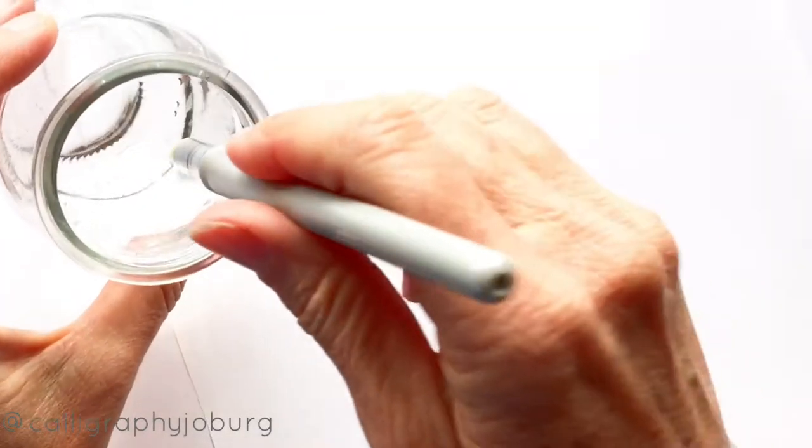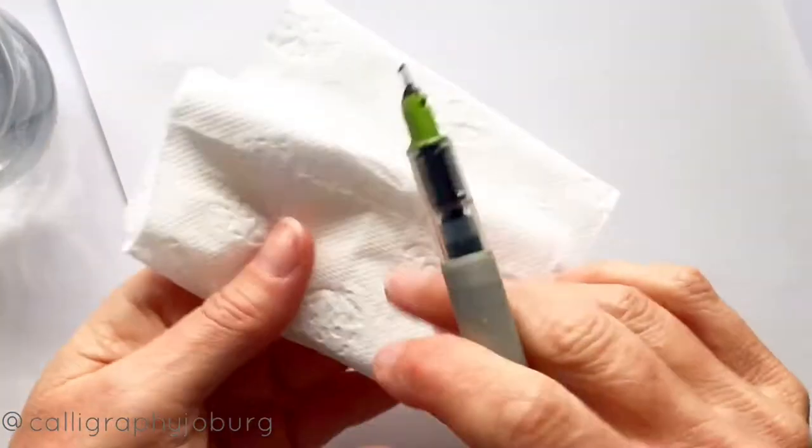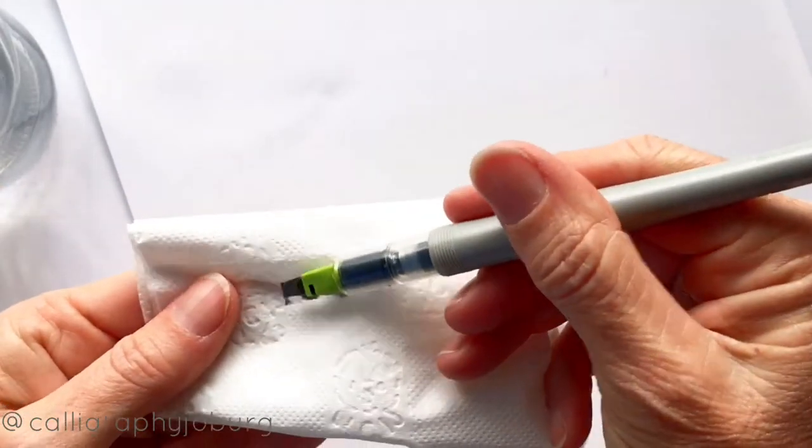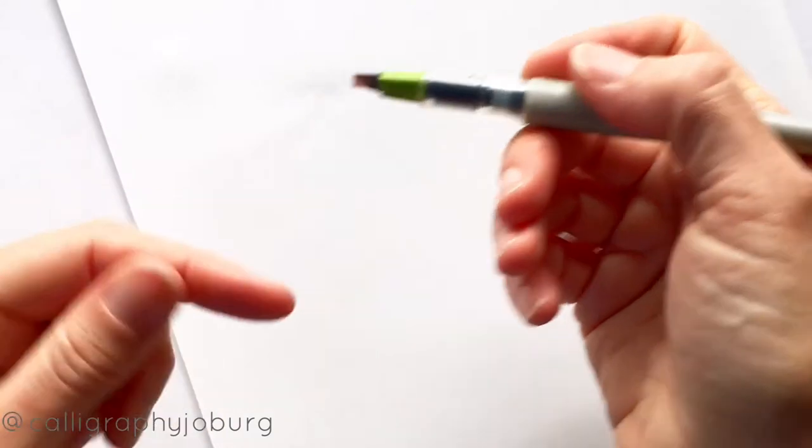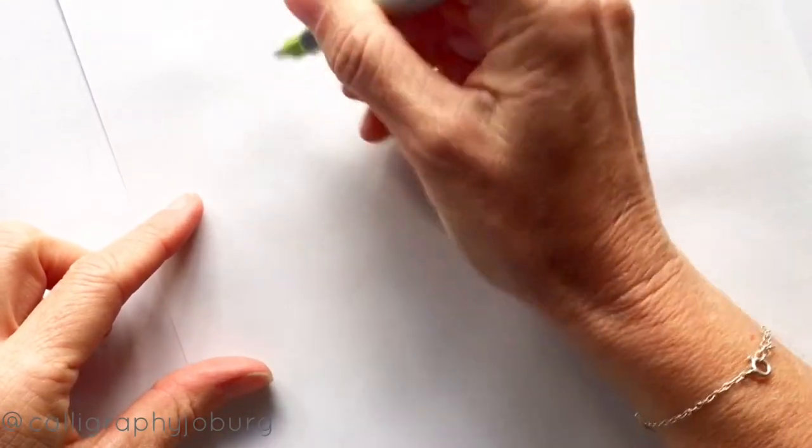So I've got some water here in a jar and I'm just going to put the nose of the pen into the water. And what that sometimes does is allow the ink to pull through. I'm not sure exactly how that works, but I would imagine that the water goes up the nib of the pen and somehow helps the ink to come through.